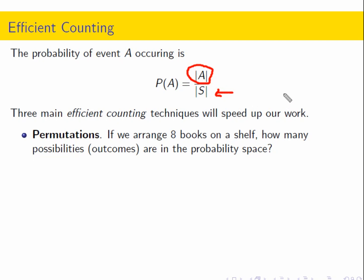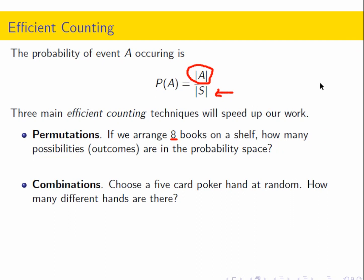We have permutations. If we arrange eight books on a shelf, how many possible outcomes are in the probability space? Notice that this is draws without replacement — as soon as I've taken one of the eight books, I only have seven books left to place in the next slot. Also notice that order matters. And then we have combinations, where the draws are without replacement and order doesn't matter — for example, when we choose a five-card poker hand at random.